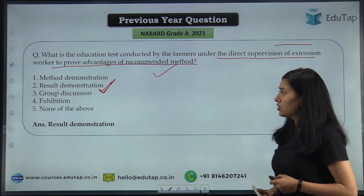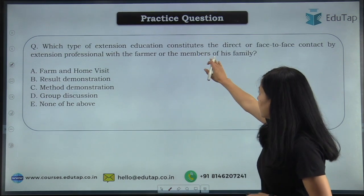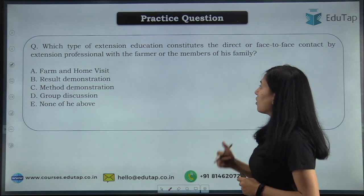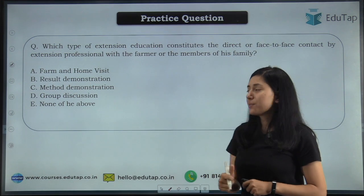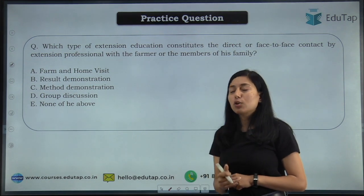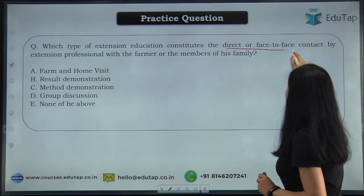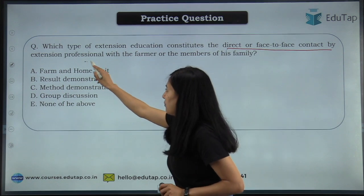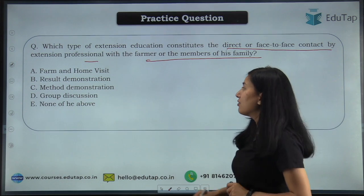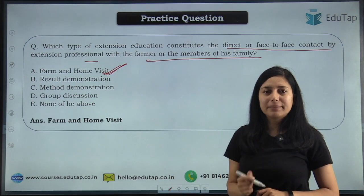Now let's practice some more questions. The next question is: which type of extension education consists of direct or face-to-face contact by an extension professional with the farmer or a member of his family? Options are farm and home visit, result demonstration, method demonstration, group discussion, none of the above. You have to read the language of the question — direct or face-to-face contact by extension professional with farmer or the member of his family. So that will be your farm and home visit. The right answer is farm and home visit.